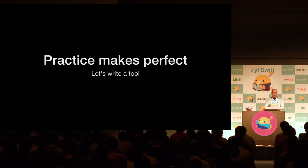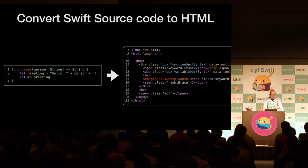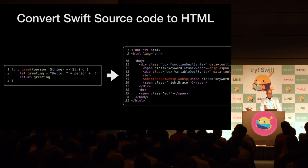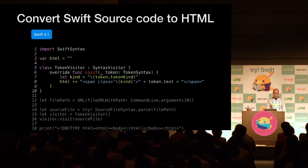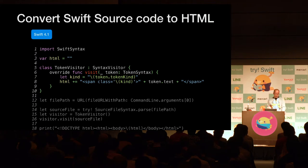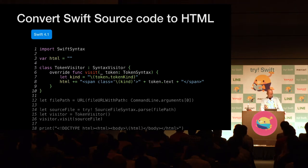They say practice makes perfect. Let's make tools that use AST. As it is called the Document Object Model tree, HTML has a tree structure like AST. Let's convert AST to HTML and make syntax highlighting using CSS. Here we use Swift Syntax. Swift Syntax makes it easy to traverse all nodes using the visitor pattern. Visit methods have a lot of overloads, and the nodes you are traversing depend on what you override. This time we would like to traverse all tokens, so we override the method that takes a TokenSyntax argument. A token is the smallest string that cannot be further divided.